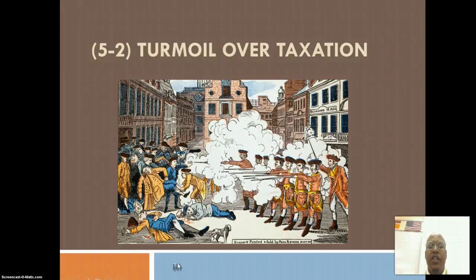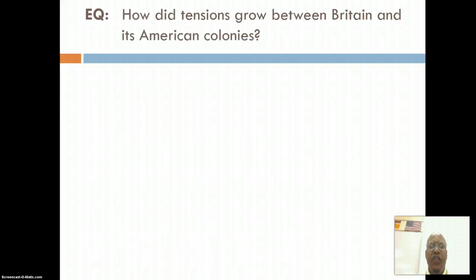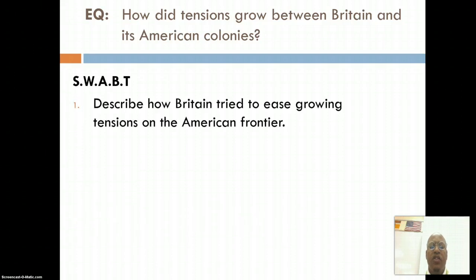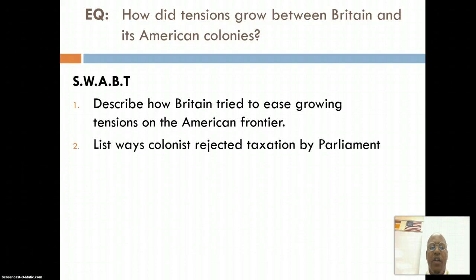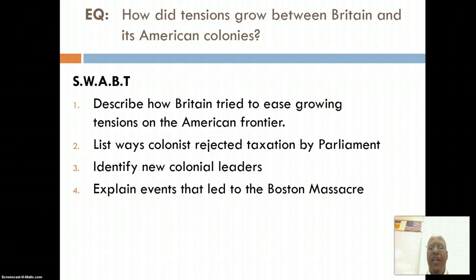Hey guys, Mr. Champion here, and we're starting Section 2 of Chapter 5, Turmoil Over Taxation. Your essential question for this section: how did tensions grow between Britain and its American colonies? In order to answer this, you should be able to describe how Britain tried to ease growing tensions on the American frontier, list ways colonists rejected taxation by Parliament, identify new colonial leaders, and explain events that led to the Boston Massacre.